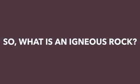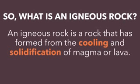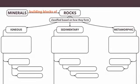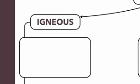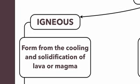So what exactly is an igneous rock? An igneous rock is a rock that formed from the cooling and solidification of magma or lava. So they form from the cooling and solidification of lava or magma. What that means is that when molten rock cools down and essentially turns into a solid, that is what an igneous rock is formed from.